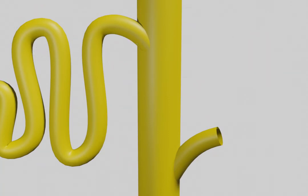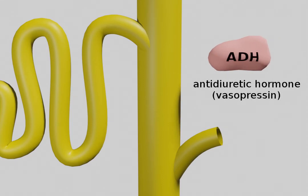Another type of antidiuretic is ADH, or antidiuretic hormone, also known as vasopressin. This hormone works a little differently. It makes the collecting duct more permeable to water.